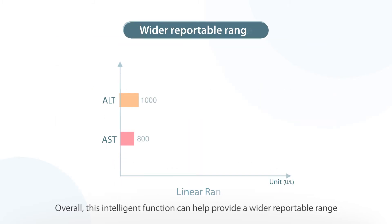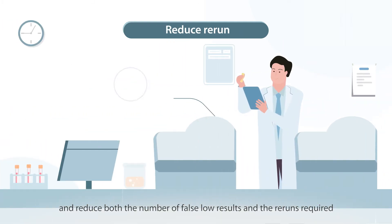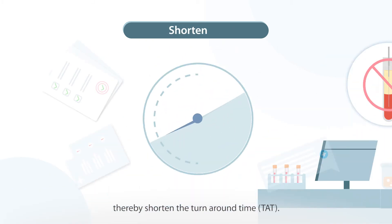Overall this intelligent function can help provide a wider reportable range and reduce both the number of false low results and the reruns required, thereby shortening the turnaround time.